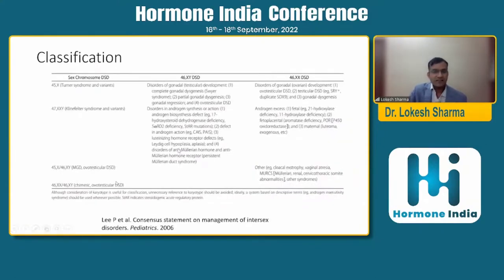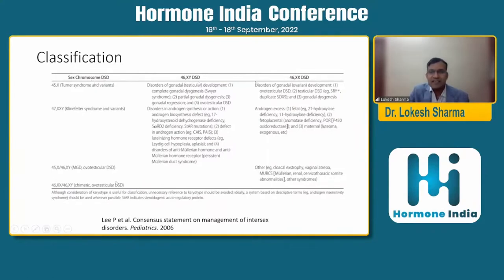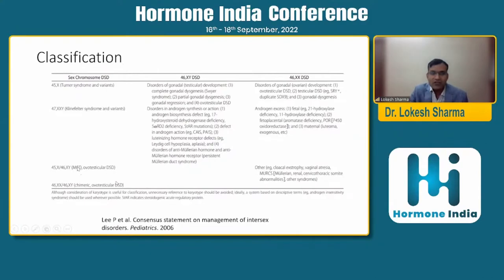The 2006 classification is still prevalent and the most scientific classification widely used. DSD is divided into three parts: sex chromosome DSD (when karyotype is not XX or XY — either addition or deletion of any sex chromosome), 46XY DSD, and 46XX DSD. The most common sex chromosome DSD is mixed gonadal dysgenesis, most commonly associated with karyotype 45XO/46XY.